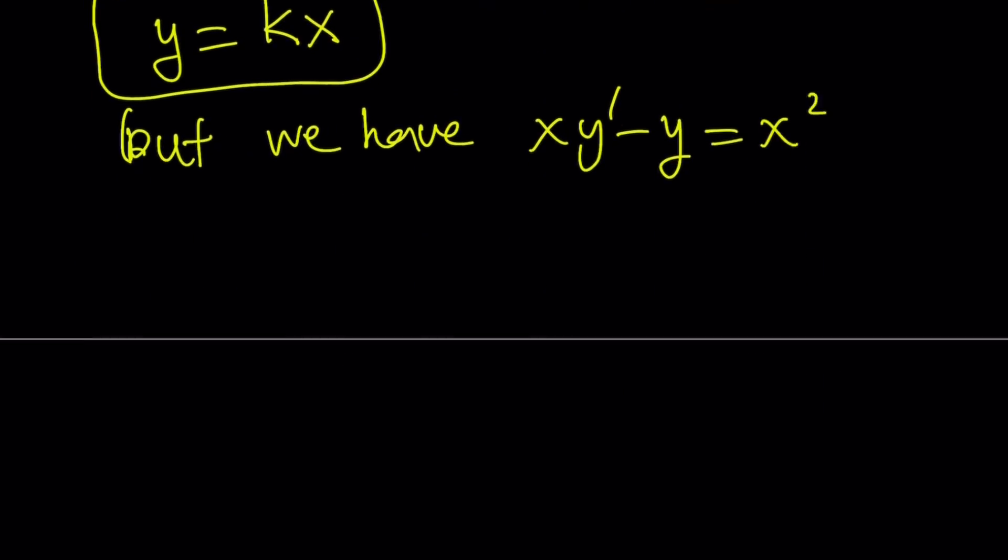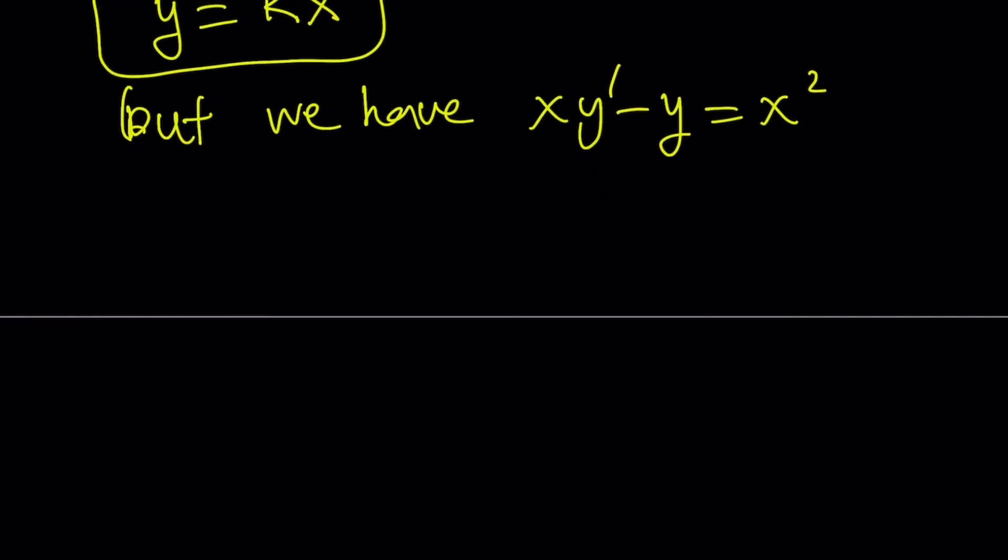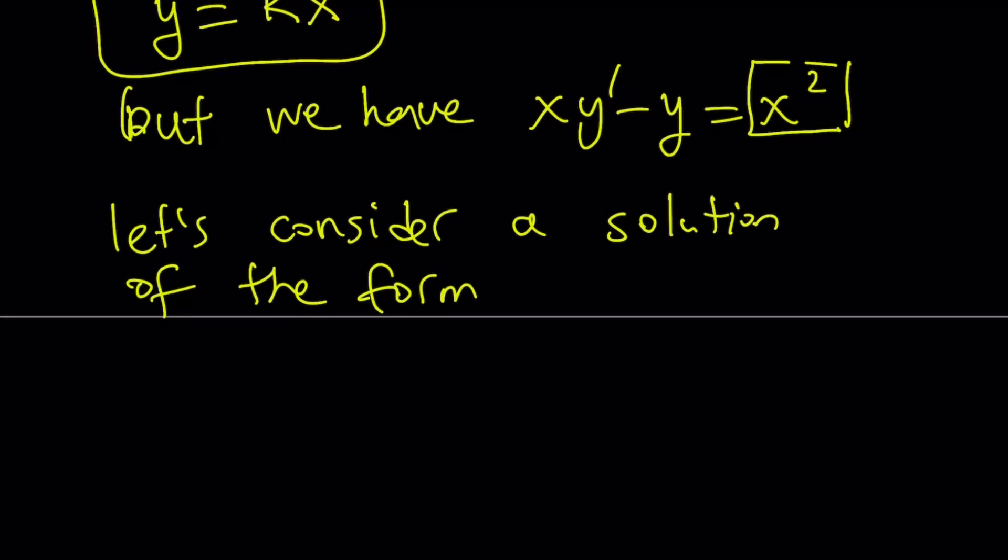Now, how do we include the non-homogeneous solution here? We're going to be considering because of x squared on the right-hand side, we are going to consider, let's consider a solution of the form x.